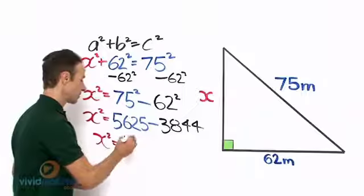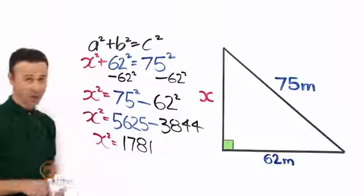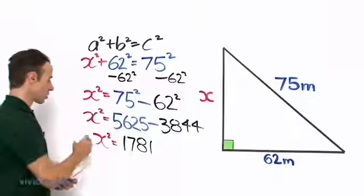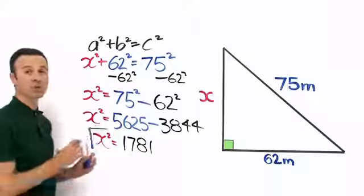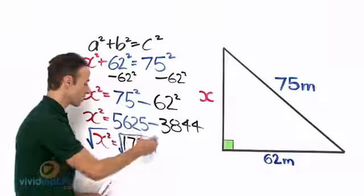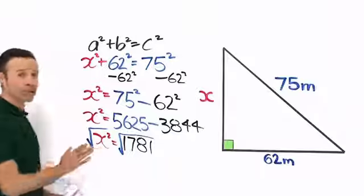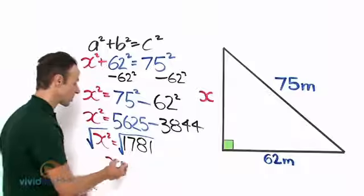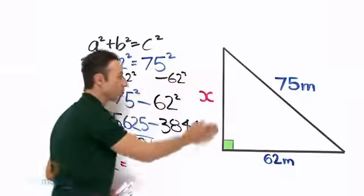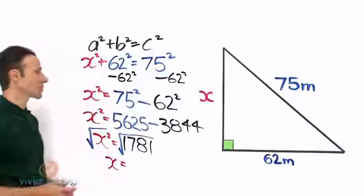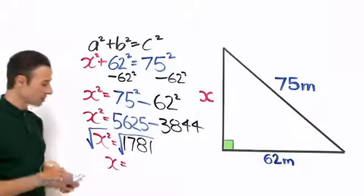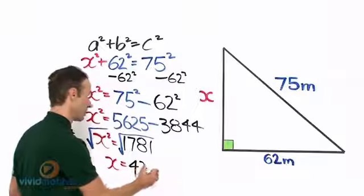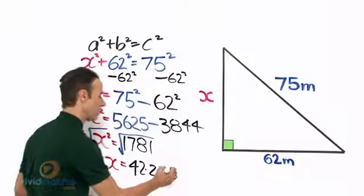Now remember it is x squared so we need to square root both sides, so let us do that. So we square root the left hand side and we also square root the right hand side. So the square root of x squared reverts back to just a normal x, so x equals, and that is the length across here that we are looking for, and the square root of 1781 is 42.20 meters.